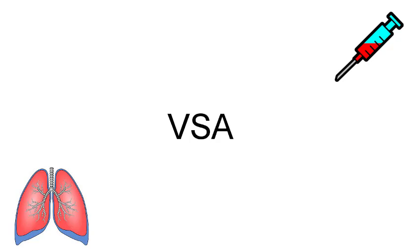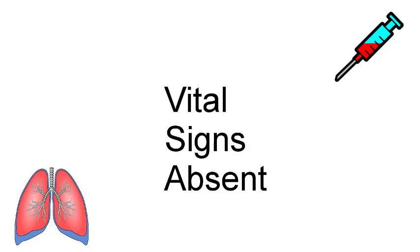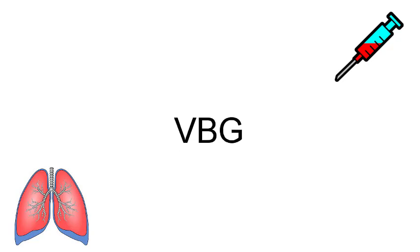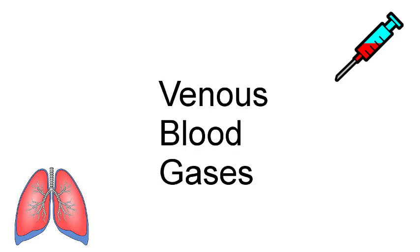VSA is vital signs absent. This is common in the ER. If somebody is essentially dead before coming in with the ambulance — no blood pressure, no heart rate, nothing like that — they're considered to be VSA, vital signs absent. So then from there, physicians will order different medications which can actually restart the heart. VBG is venous blood gases. This is just a diagnostic tool for certain diseases.